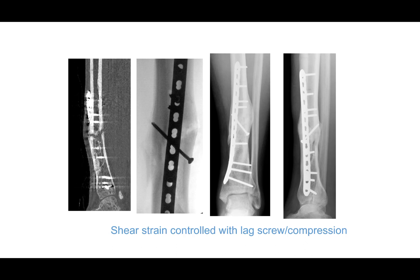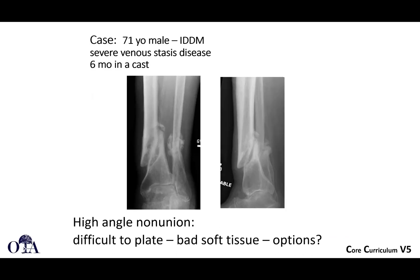Shear strain can be controlled with lag screw and compression. This was revised to a somewhat longer plate, and a screw was placed across the non-union to attempt to compress it, which helped to control the mechanical environment.